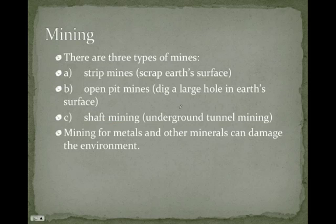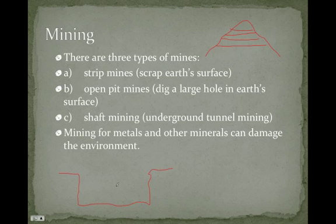Mining is when we remove the material from the Earth, and there are three main types. A strip mine is where you scrape the Earth's surface and remove it layer by layer — think of a hillside being removed layer by layer to get to the mineral. An open pit mine is where you dig a large hole in the Earth's surface to reach the mineral at the bottom, which later has to be refilled to make the land usable again. Shaft mining, or deep underground tunnel mining, is when the mineral is found deep underground and we have to dig a tunnel to reach it. Shaft mining is the most dangerous and most expensive; open pit and strip mining are cheaper because they are easier to do.